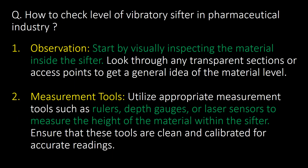How do you check the level of a vibratory shifter in the pharmaceutical industry? There are two methods for level checking. First, vibration — start by visually inspecting the material inside the shifter. Second, using a measurement tool — utilize appropriate measurement tools such as rulers, depth gauges, or laser sensors to measure the height of the material within the shifter.